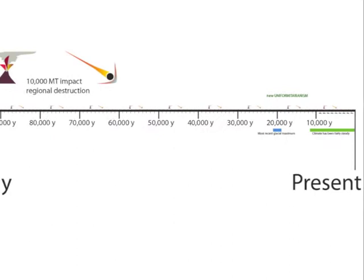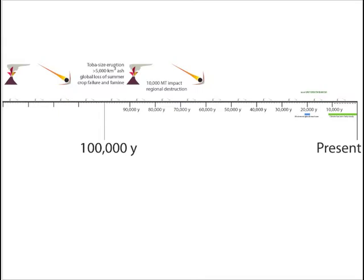On a 100,000-year timeline, catastrophes occur on a scale never recorded in human history. We're getting out past the time of the last glacial maximum.